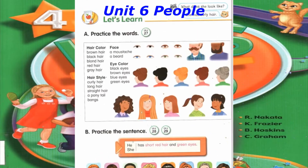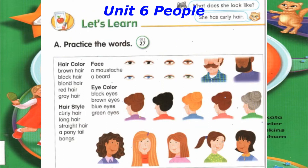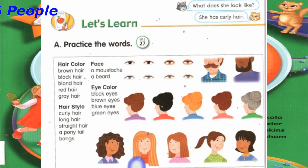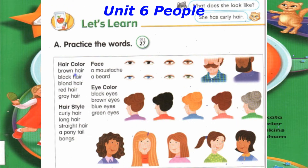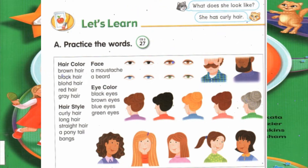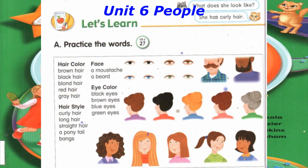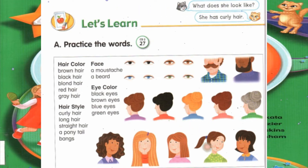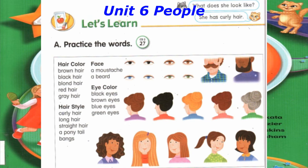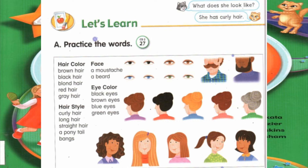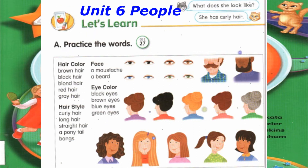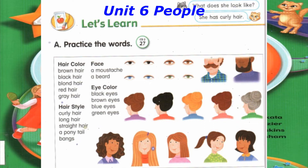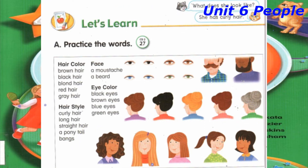Track 27, Let's Learn A. Practice the Words. Hair Color: Brown hair, Black hair, Blonde hair, Red hair, Gray hair. Hairstyle: Curly hair, Long hair, Straight hair, A ponytail, Bangs. Face: A mustache, A beard. Eye color: Black eyes, Brown eyes, Blue eyes, Green eyes.